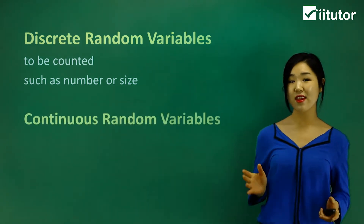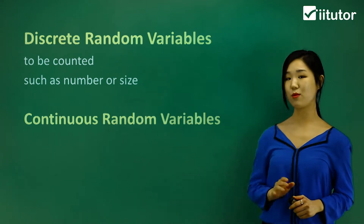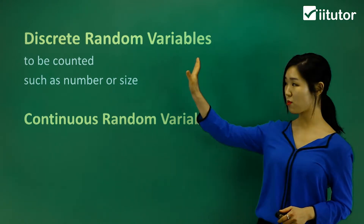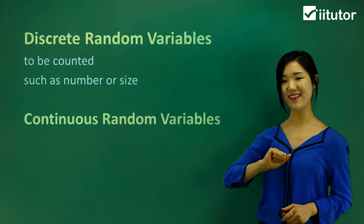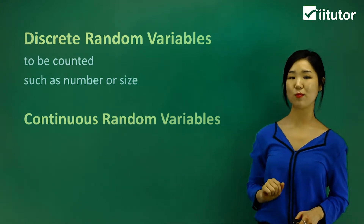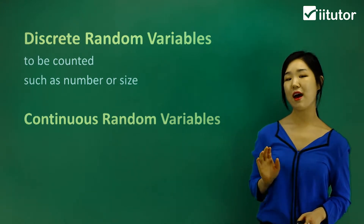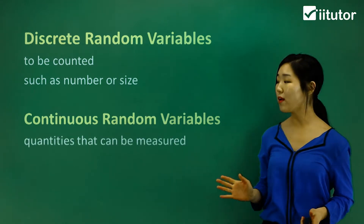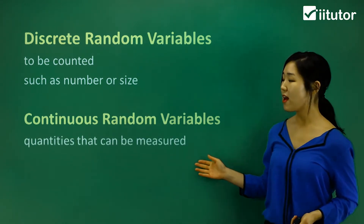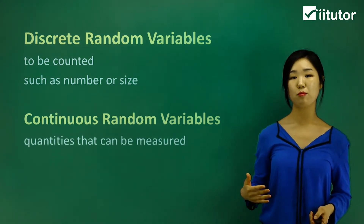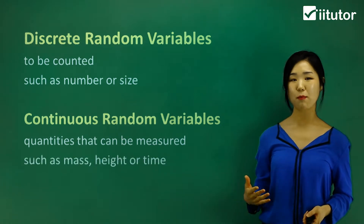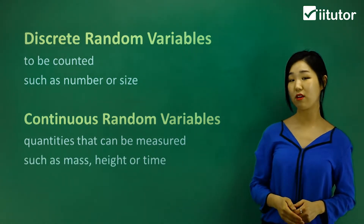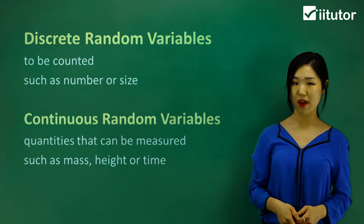The next one is continuous random variables. There are two types to remember: discrete, which we've just discussed, and continuous. Continuous random variables are quantities that can be measured — things like mass, height, and time. These are all parts of continuous random variables.